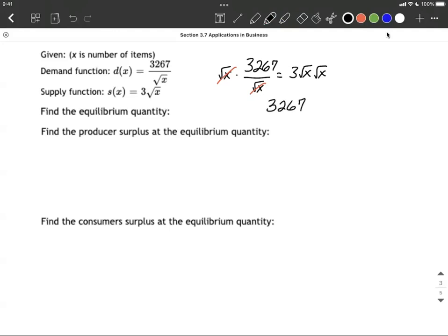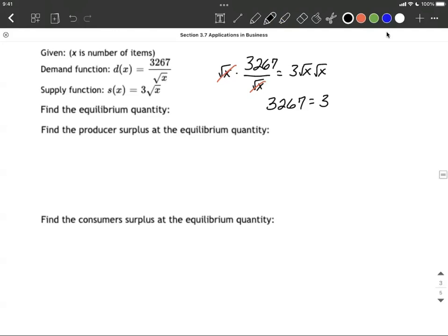So 3267 equals 3 multiplied by the square root of x times the square root of x makes just x to the first power. To finish this up and get x by itself, we'll divide both sides by 3. So I get x equals 1089.